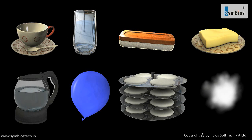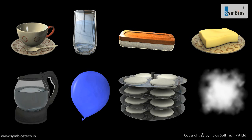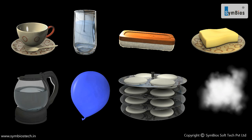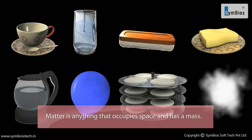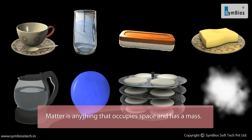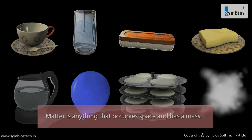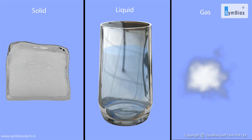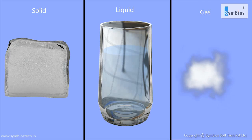We have so many things around us. Scientifically, all these things are made up of matter. Matter is anything that occupies space and has mass. Matter exists in three states: solid, liquid, and gas.